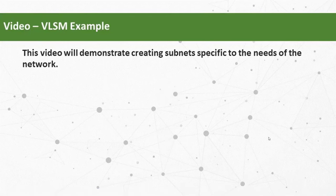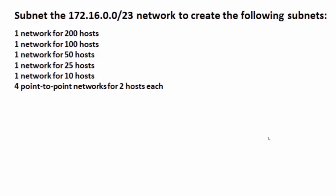In this scenario, the task is to subnet the 172.16.0.0/23 network to create the following subnets: one network for 200 hosts, one network for 100 hosts, one network for 50 hosts, one network for 25 hosts, one network for 10 hosts, and four point-to-point networks for two hosts each. Before beginning, I need to check if there are enough addresses in this address space to create all of these subnets.